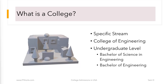Besides, a college may offer just a specific stream of education. For example, a college could be an engineering college and can offer only engineering degrees such as Bachelor of Science in Engineering or Bachelor of Engineering.